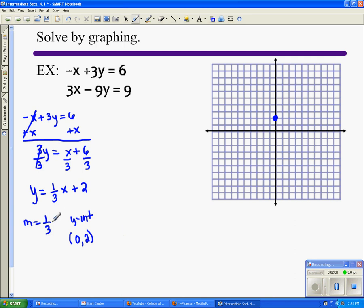And then we rise over run. So we're going to go up one, right three. So from there you go up one, right one, two, three. Up one, right three. And then we're going to graph a line through that.